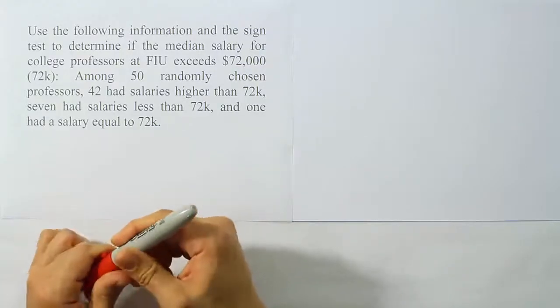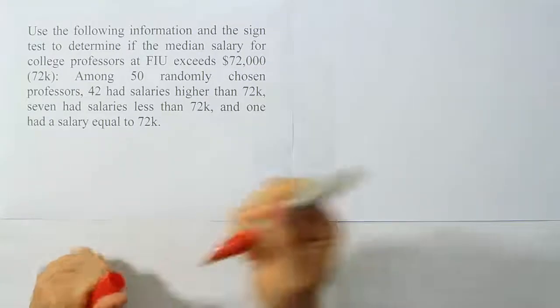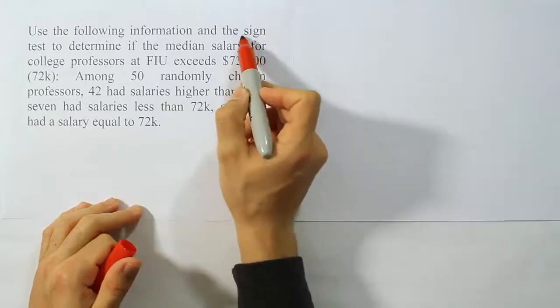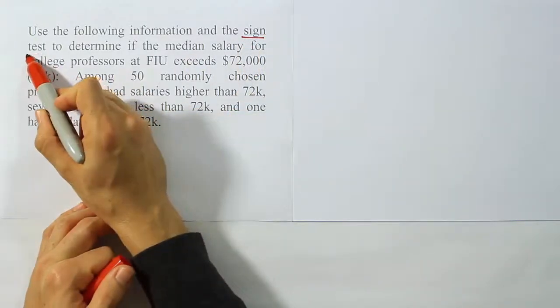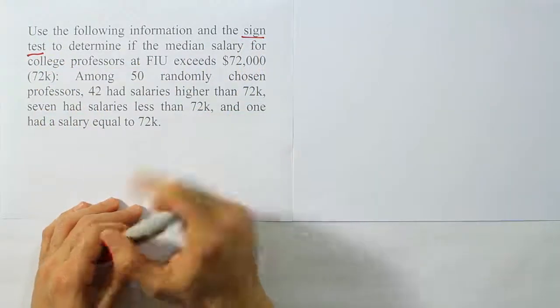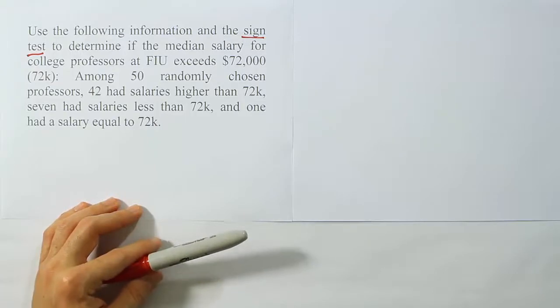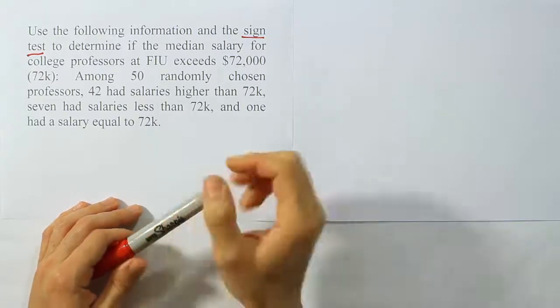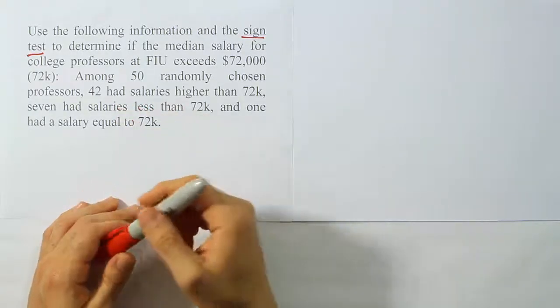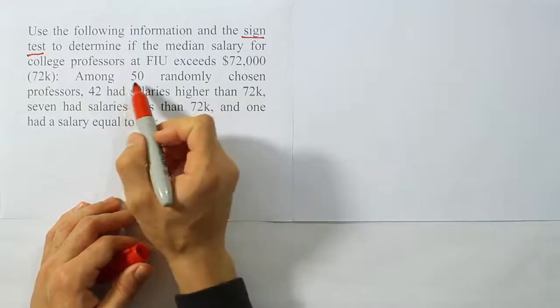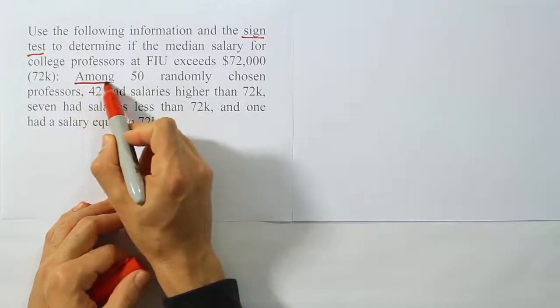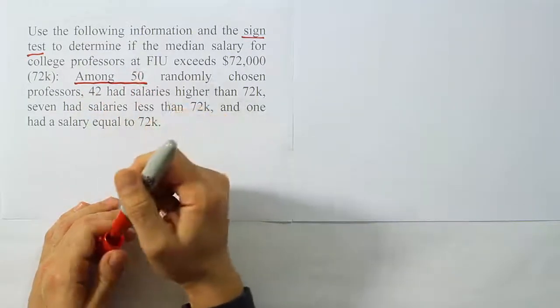First thing we see obviously is that this is clearly a sign test problem, right? It says use the sign test. Then they give us some information, and it's not laid out like we normally see the sign test material given. It's given verbally expressed. And the other thing is that this sample size is rather large, right? Large sample size of 50.